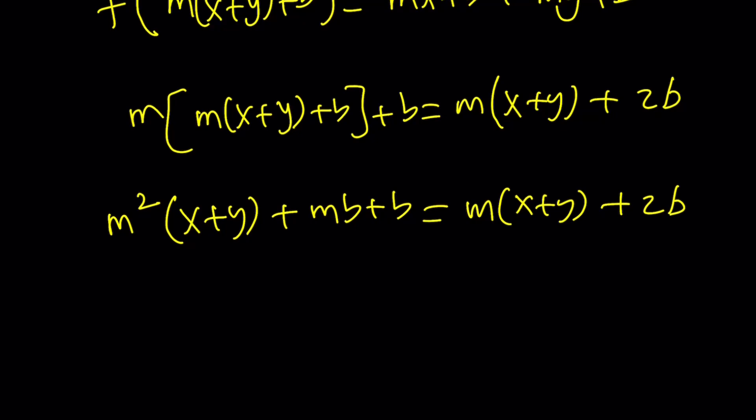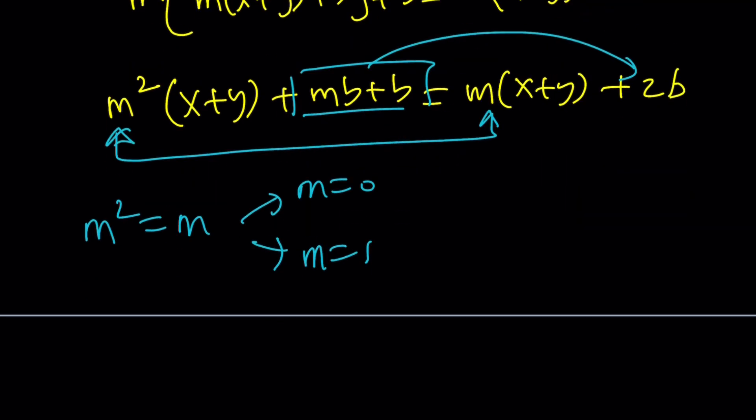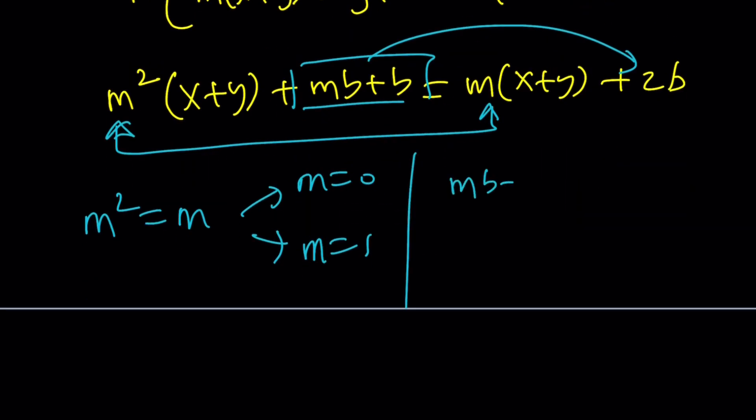Now, notice that x and y are real numbers. This needs to be true for all real numbers. Therefore, we can safely say that the coefficient of x plus y needs to be the same on both sides. This implies m² equals m, and that means m equals 0 or m equals 1. The second thing tells us that mb plus b equals 2b. Subtract b from both sides and factor the b out, you get b equals 0 or m equals 1.